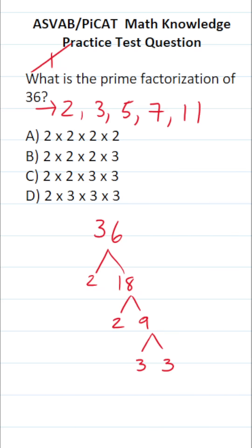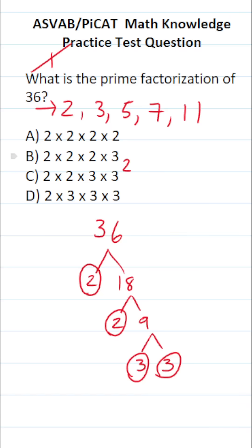Now let's go through this factor tree and circle all of our prime numbers. 2 is prime, 2 is prime, 3 is prime, and 3 is prime. In other words, the prime factorization of 36 is 2 times 2 times 3 times 3.